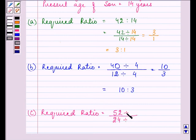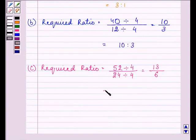And the HCF is again 4. So we have 13 by 6, that can be written as 13 to 6.